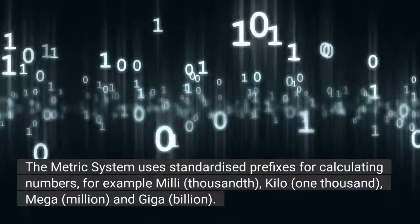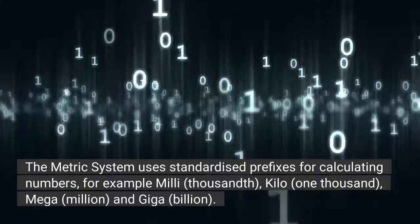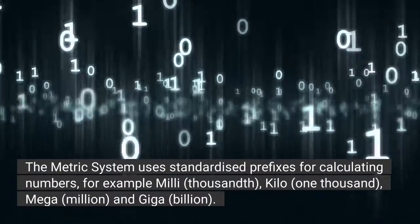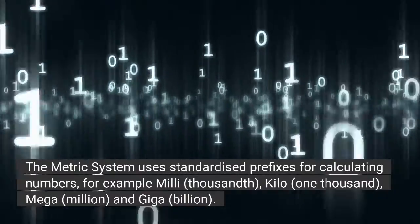The metric system uses standardized prefixes for calculating numbers, for example milli (thousand), kilo (one thousand), mega (million), and giga (billion).